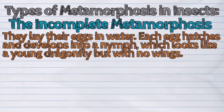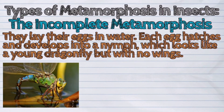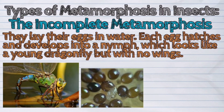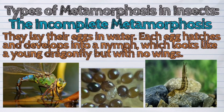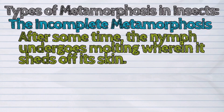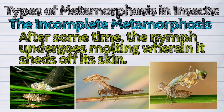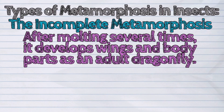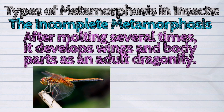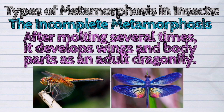They lay their eggs in water. Each egg hatches and develops into a nymph, which looks like a young dragonfly but with no wings. After some time, the nymph undergoes molting, wherein it sheds off its skin. After molting several times, it develops wings and body parts as an adult dragonfly.